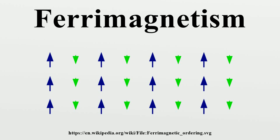Not to be confused with ferromagnetism, for an overview see magnetism in physics. A ferrimagnetic material is one that has populations of atoms with opposing magnetic moments, as in antiferromagnetism.